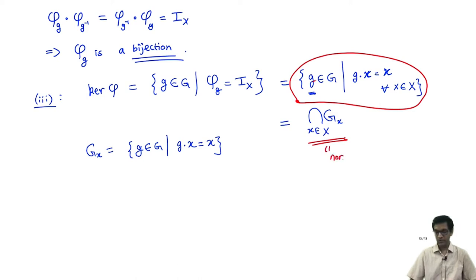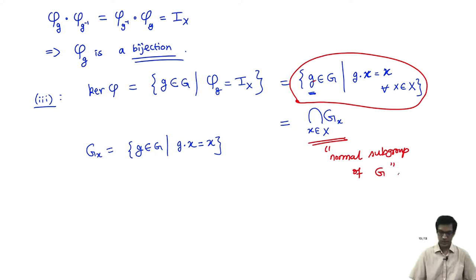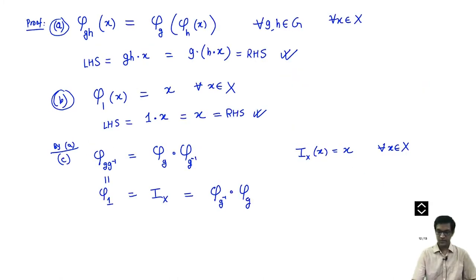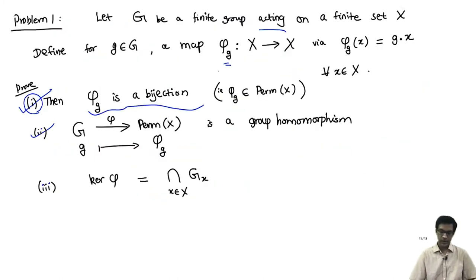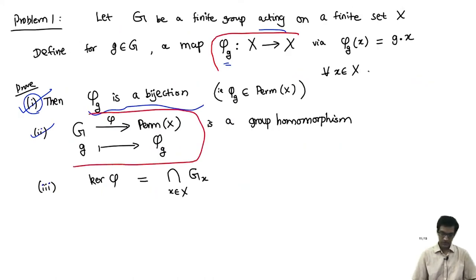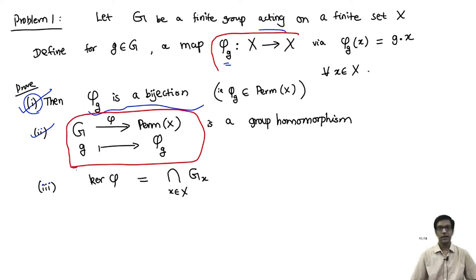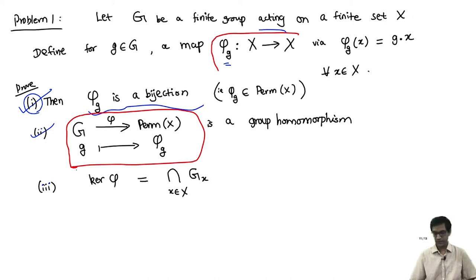So the intersection of stabilizers of all elements of X is actually a normal subgroup, because it is the kernel of a homomorphism. This is sometimes a very useful construction. The point is that you can view actions as equivalent to a homomorphism from G to the group of permutations of a set.